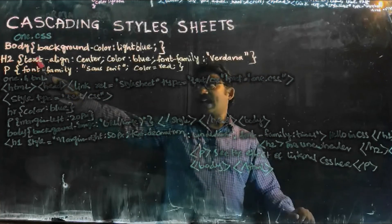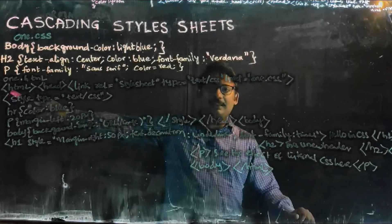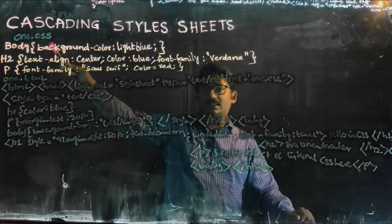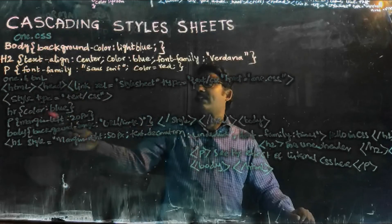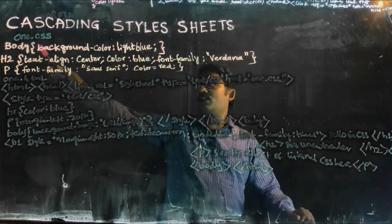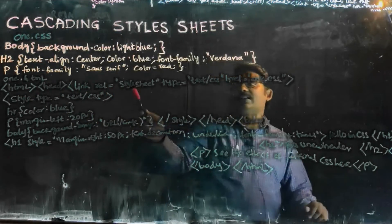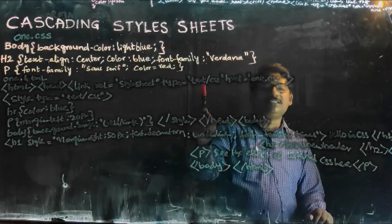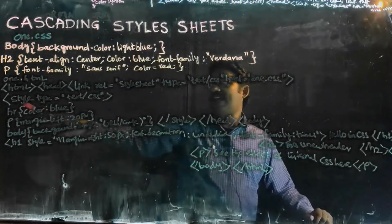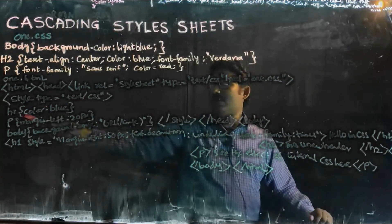So whenever I use H2 here, this one dot CSS will affect it. And wherever I use P, this will also affect it in the one dot HTML program. The cascading code which you want, you give it externally in a separate file named one dot CSS, and this particular file will be linked to the one dot HTML file. In HTML header: link REL equal to stylesheet, type equal to text slash CSS, HREF equal to one dot CSS.